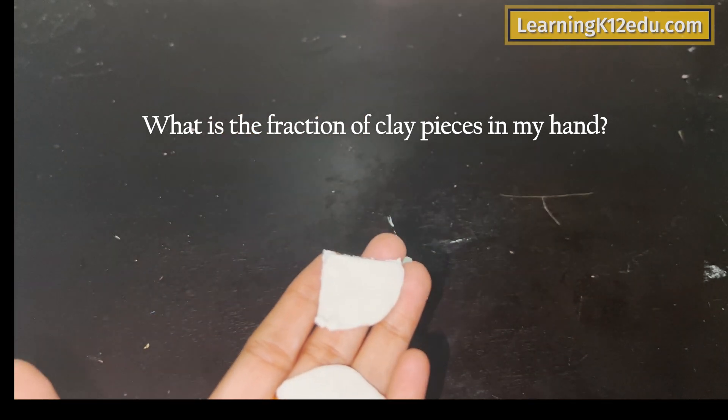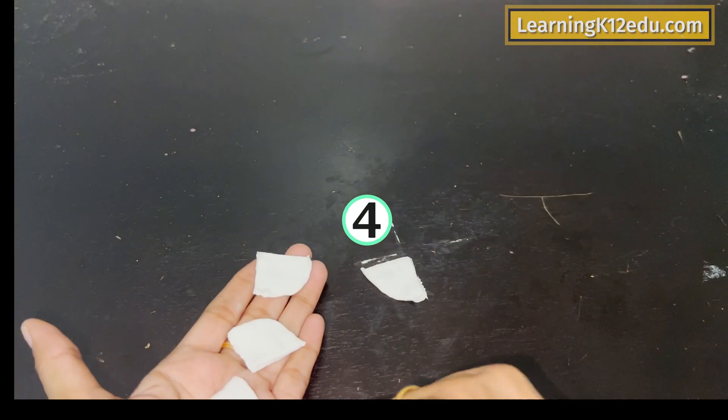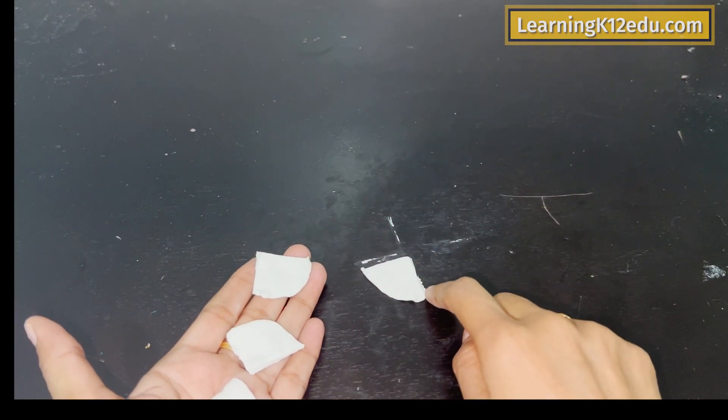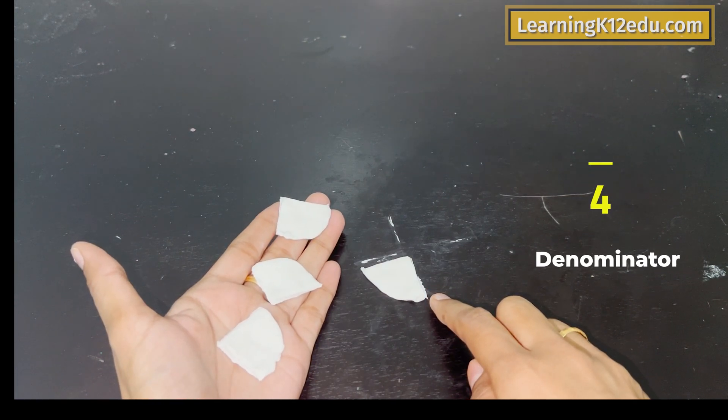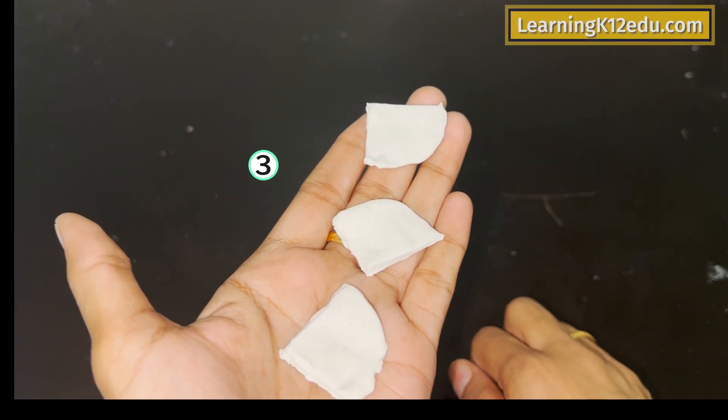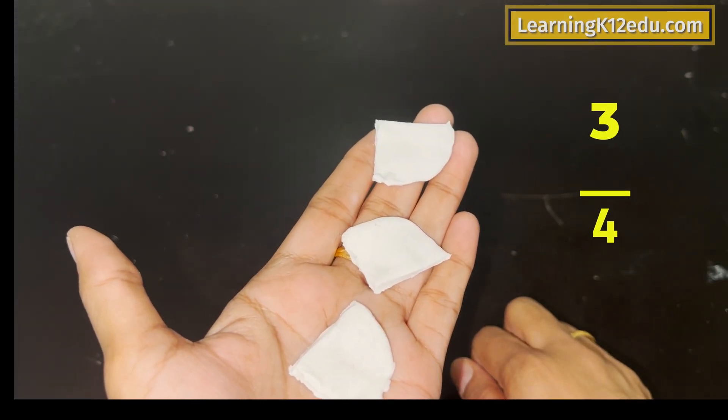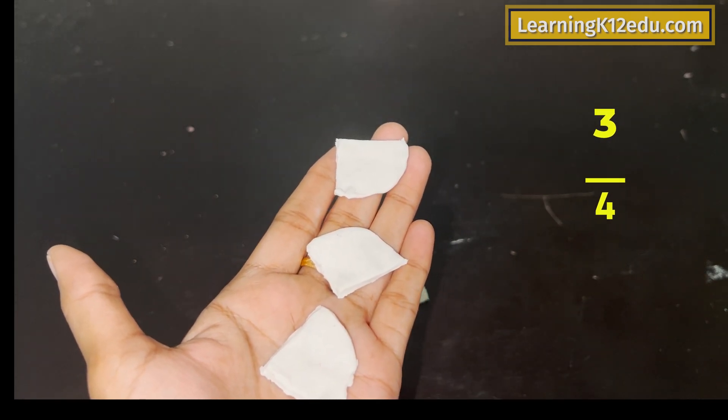Yes. So the number of pieces that clay was cut into is four. Hence, four goes at the bottom as denominator. And the number of pieces in my hand is three. So three goes at the top as numerator. So the fraction will be written as three by four.